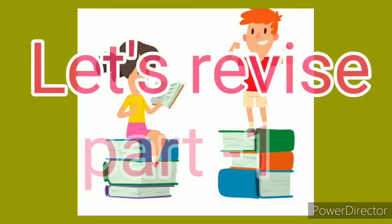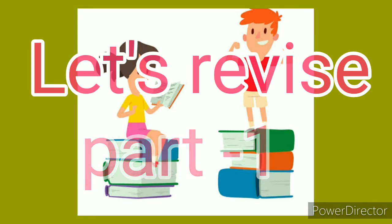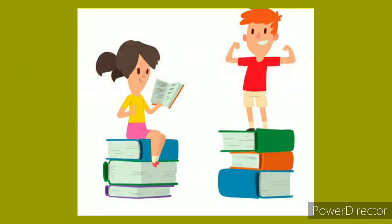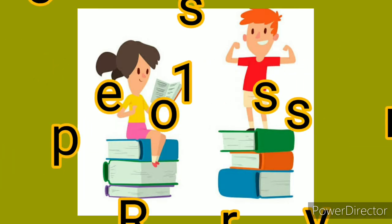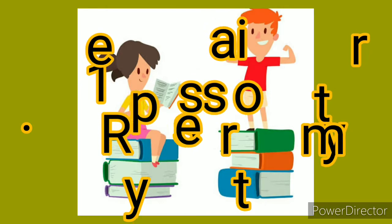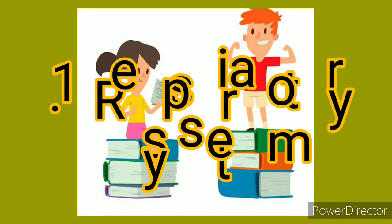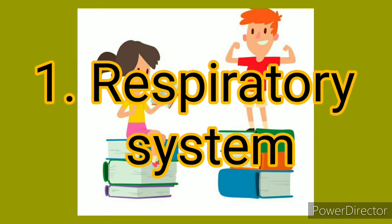Let's revise part 1. The respiratory system consists of nostrils, pharynx, trachea and lungs. The respiratory system of human beings begins with the nose, where air is conditioned by warming and moisture. Hair-like cilia trap dust particles and purify the air.